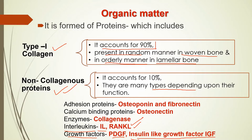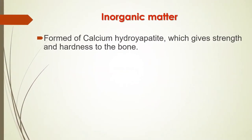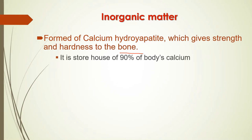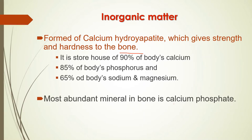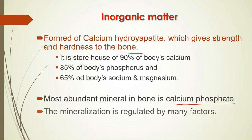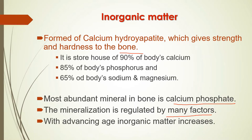The inorganic matter of bone is mainly formed of calcium hydroxyapatite, which gives strength and hardness to the bone. It is the storehouse of 99 percent of the body's calcium, 85 percent of the body's phosphorus, and 65 percent of the body's sodium and magnesium. The most abundant mineral in the bone is calcium phosphate. Mineralization is generally initiated about 12 to 15 days after the formation of bone matrix. With advancing age, the inorganic matter increases and bones become brittle and easily fracturable.